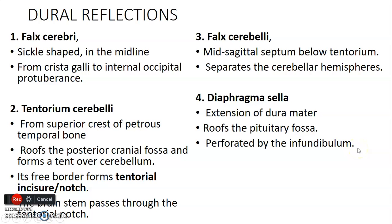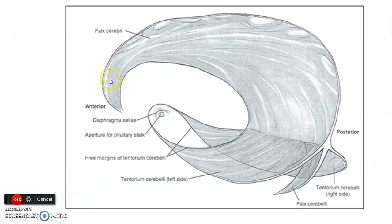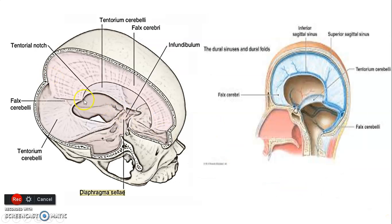To summarize: the falx cerebri is between the two cerebral hemispheres; the falx cerebelli is between the two cerebellar hemispheres; the tentorium cerebelli separates the cerebellar hemispheres from the cerebral hemispheres and has a tentorial notch; and the diaphragma sellae forms the roof of the hypophysial fossa, perforated by the infundibulum or pituitary stalk. The falx cerebri extends from the crista galli anteriorly to the internal occipital protuberance, with the superior sagittal sinus on top and the inferior sagittal sinus below.